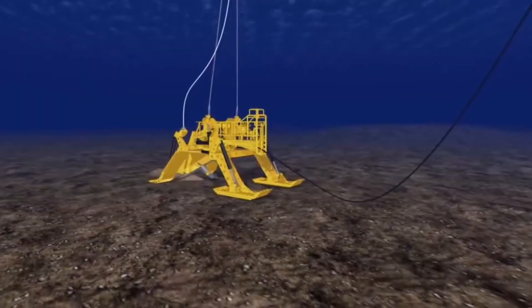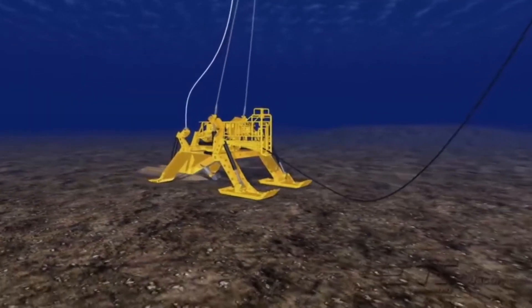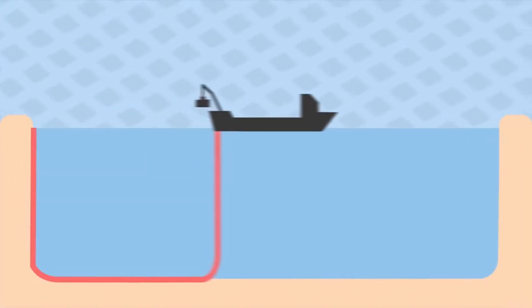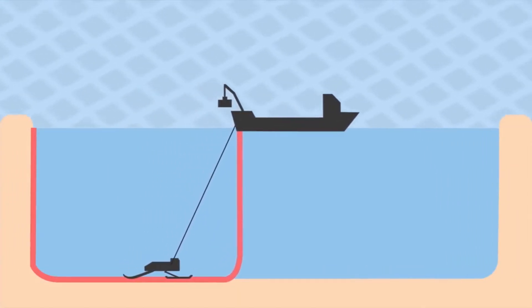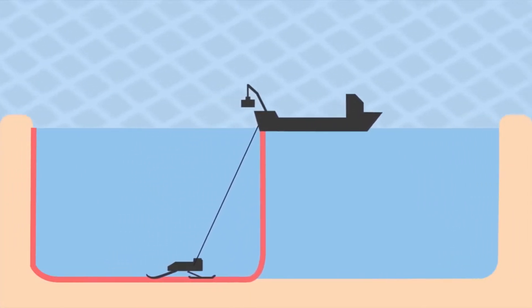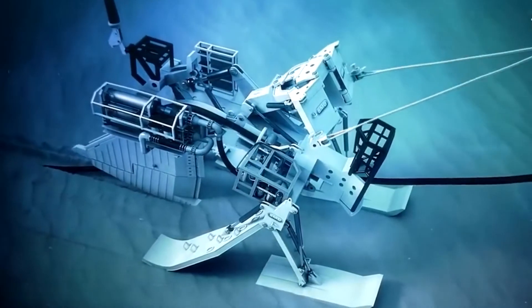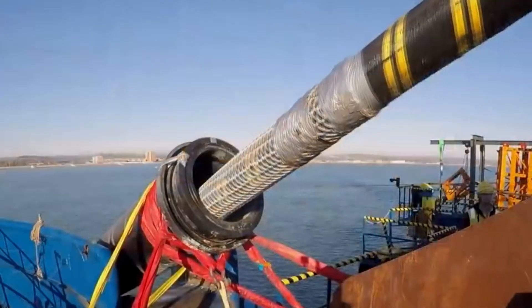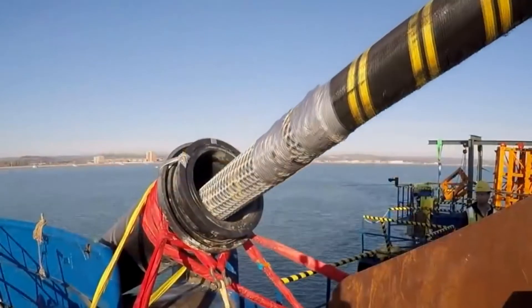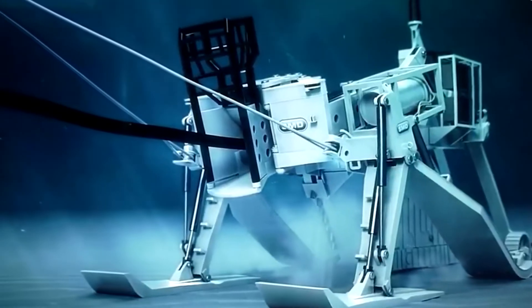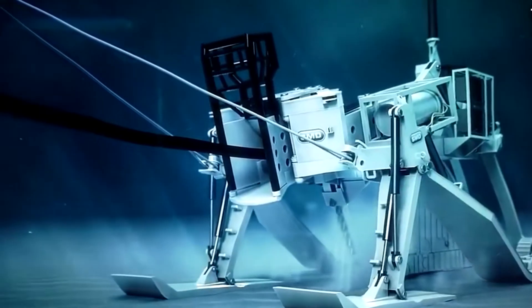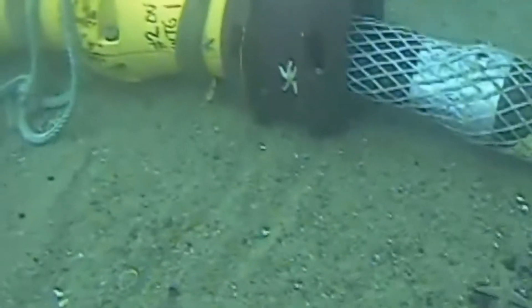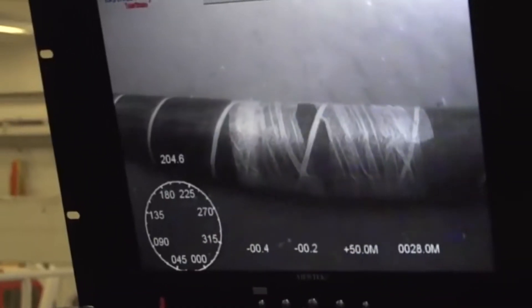An underwater plow machine is lowered to bury the cable. The ship slowly leaves the shore while the plow plants the cable along the designated path. The cable is not buried too deep, in accordance with soil density and coastal traffic conditions, to keep it safe from anchors of passing boats.